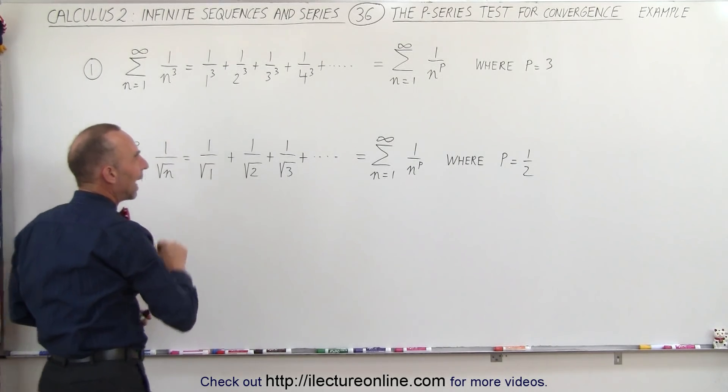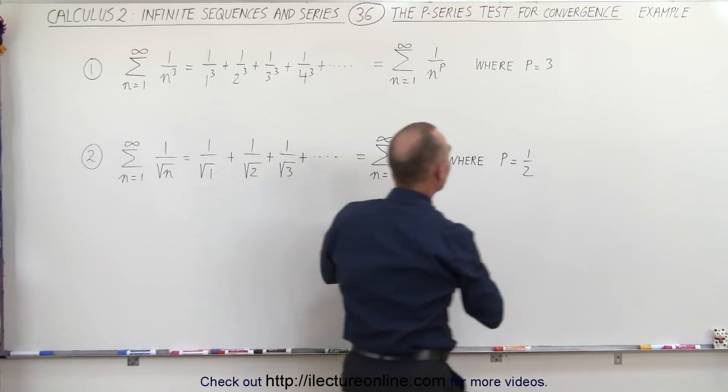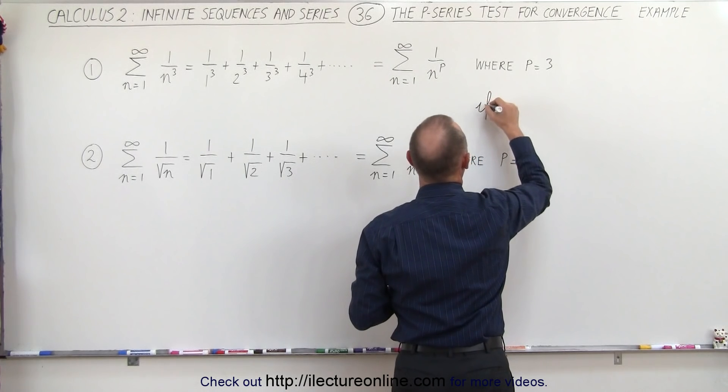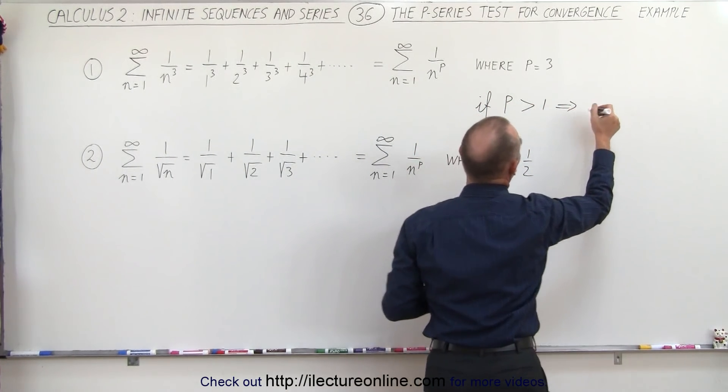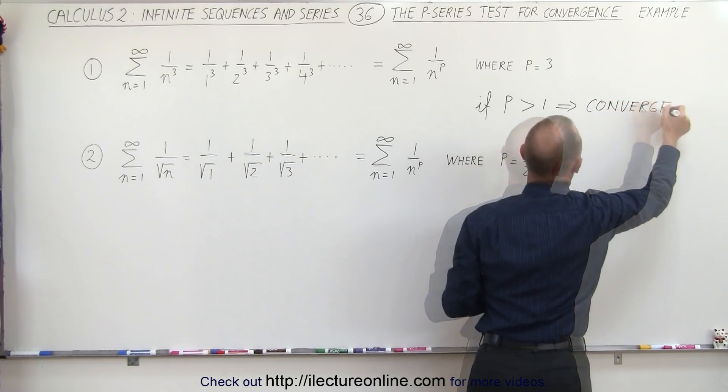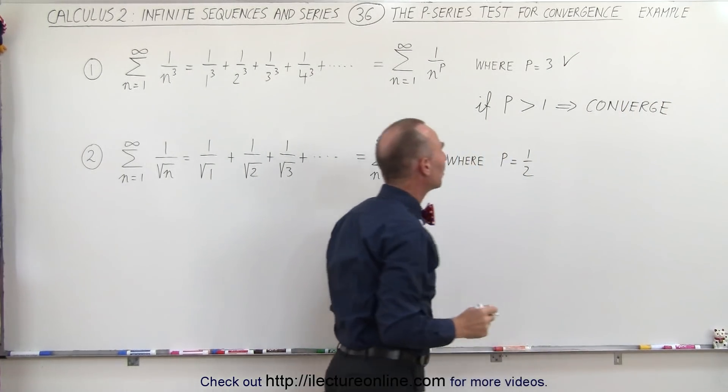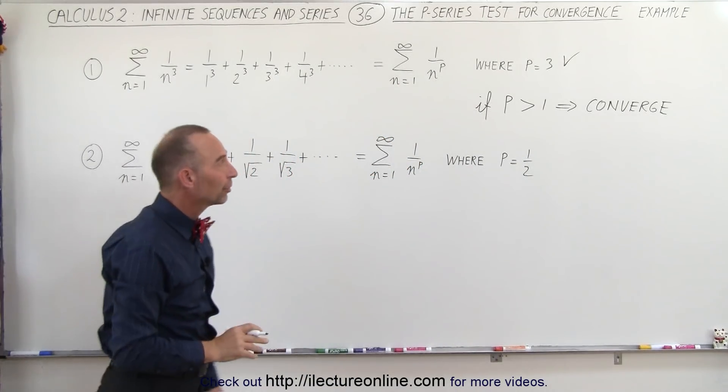The test tells us that if p is greater than 1, we know that the series will converge. So that satisfies that condition, and therefore the first example does converge.